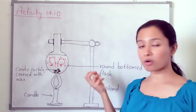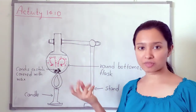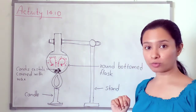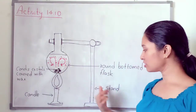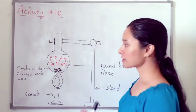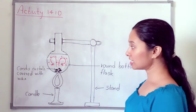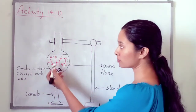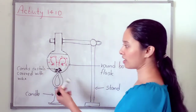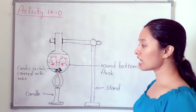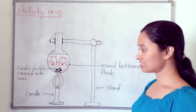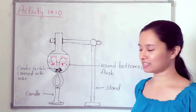These condis crystals should be covered with wax. Then we need a candle. We have to fix the flask to the laboratory stand, take some condis crystals covered with wax, and put them into the bottom of the flask. Then we pour water into the flask as shown in the figure, and heat the flask using the candle. Then observe what will happen.